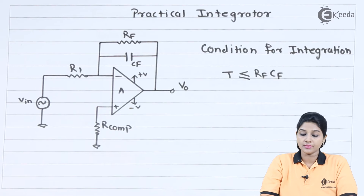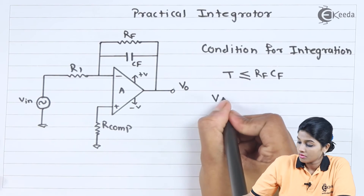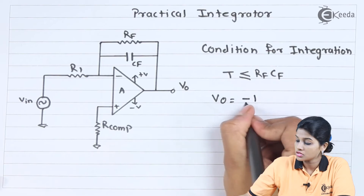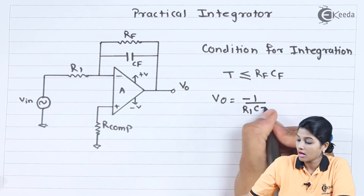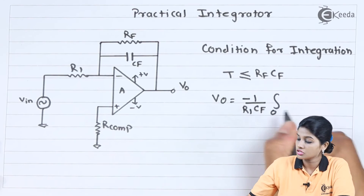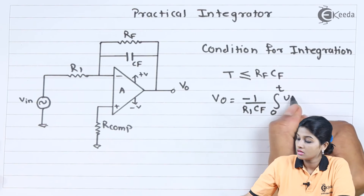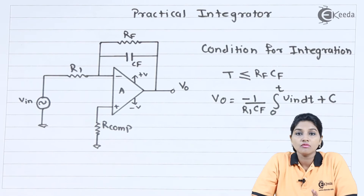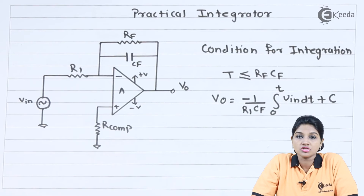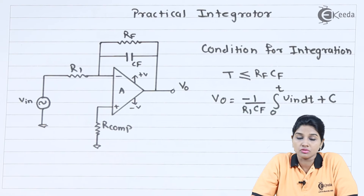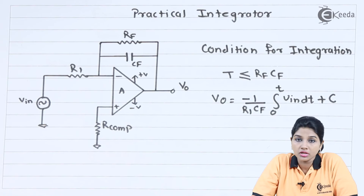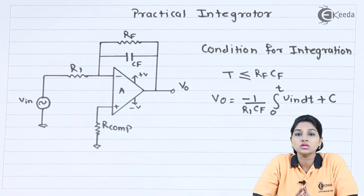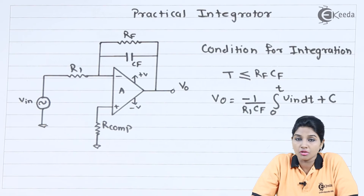The output equation is given by: V_O equals minus 1 by R1·CF times the integral from 0 to T of V_in dT, plus C — where C is the integration constant equal to the output value when time period equals 0, and it is approximately considered as 0. The minus sign is included in the equation because the input is given to the inverting terminal of the op-amp.